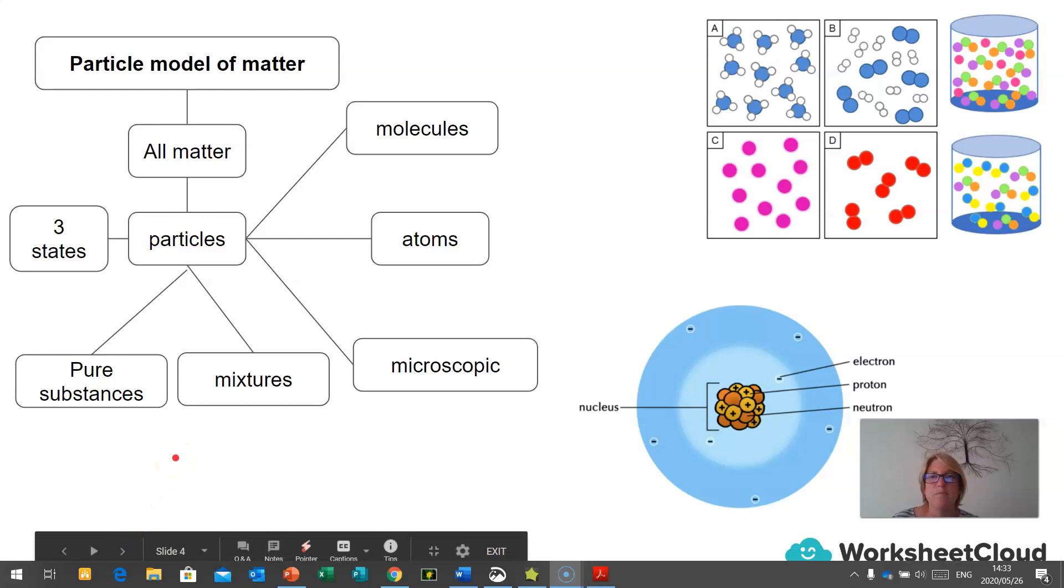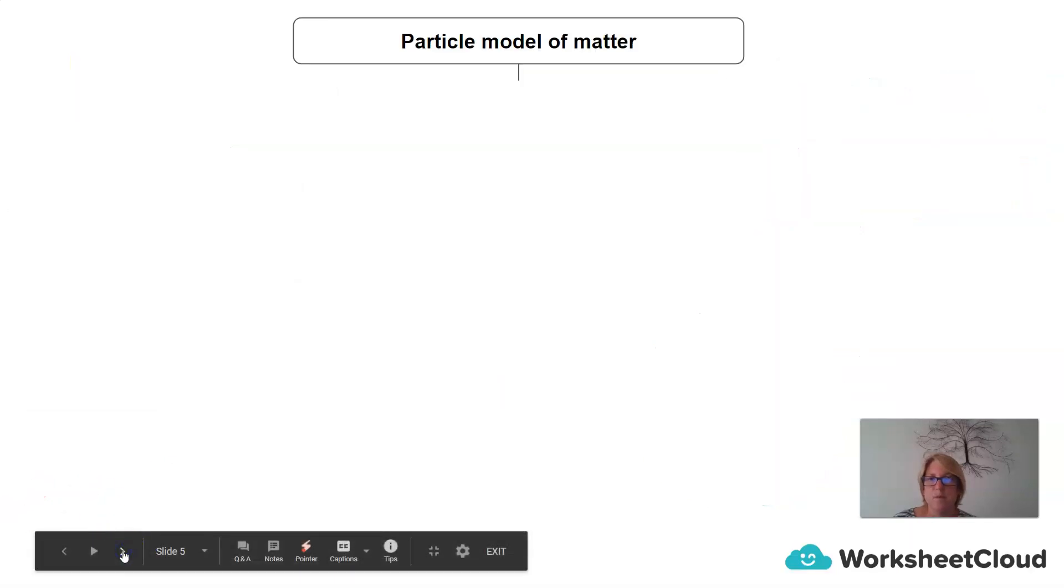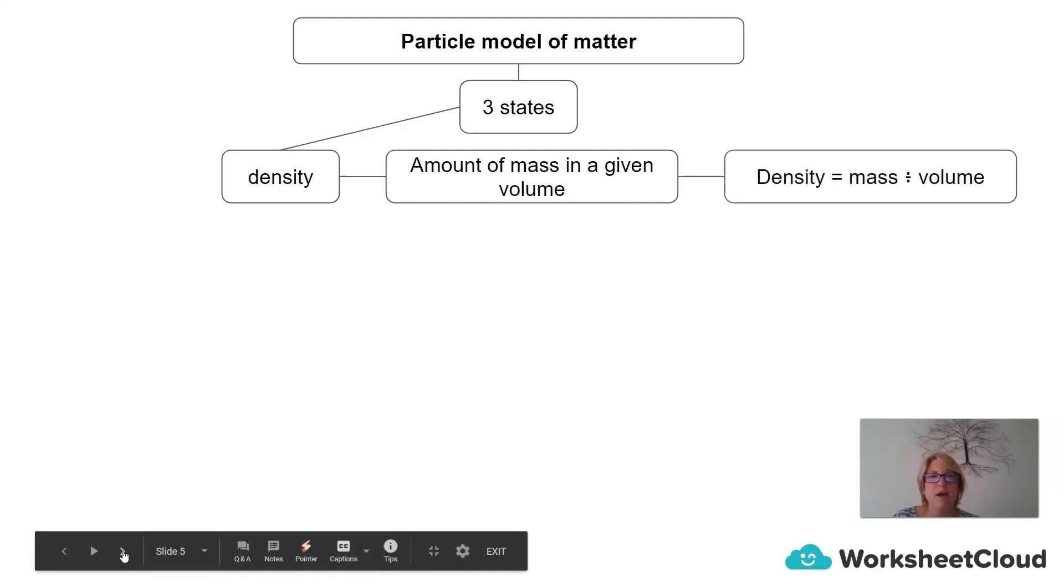Remember that the particles are still linked with the three states of matter. And if we continue with the particle model of matter, and it's made up of three states, then we can have a look at the density. And density is the amount of mass in a given volume. And the equation for density is density equals mass divided by volume.